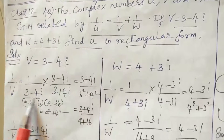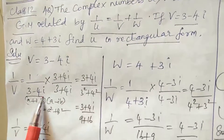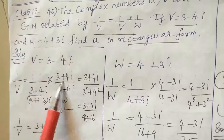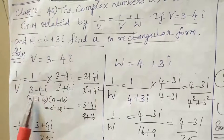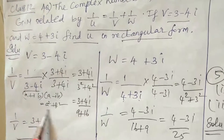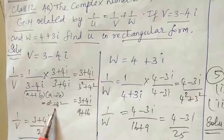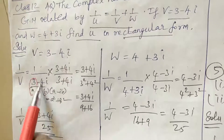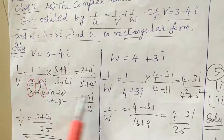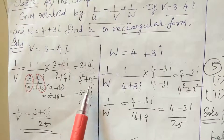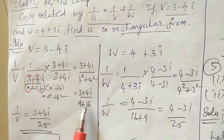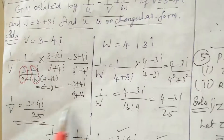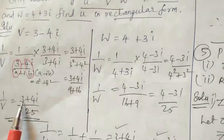1/V equals 1/(3 minus 4i). Multiply by conjugate (3 plus 4i)/(3 plus 4i). Using the formula (A+B)(A-B), where A is 3 and B is 4: 3 squared is 9, 4 squared is 16. So 1/V equals (3 plus 4i) divided by 25.